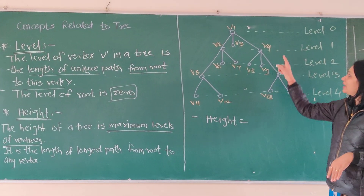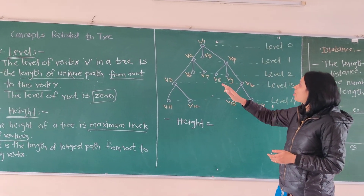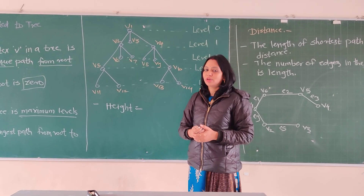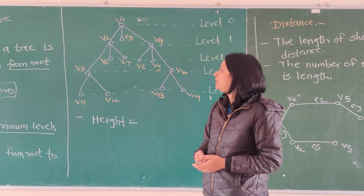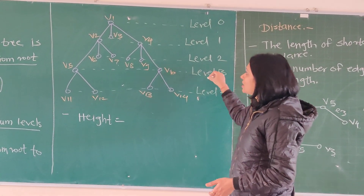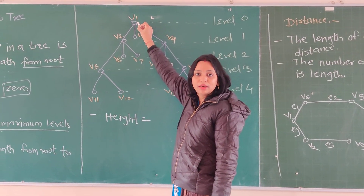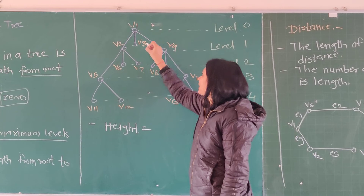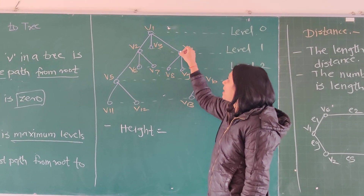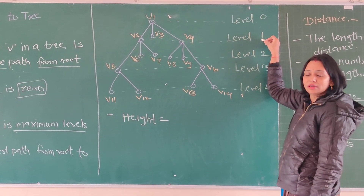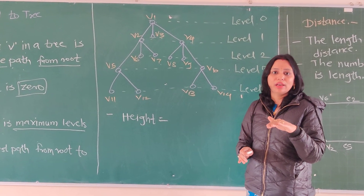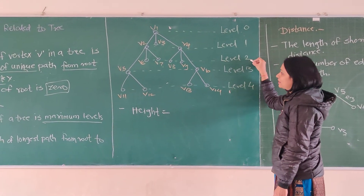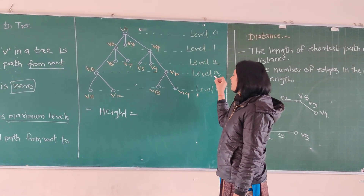Let's see an example. We have a particular tree where the root node is V1, and parent and child nodes are present. We call it a tree because there is a root node and no circuit. Now we assign levels to the vertices. V1, the root node, is at level 0. The nodes directly connected to the root are at level 1. V6, V7, V8, and V9 are at level 2.